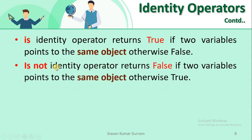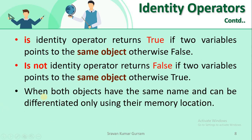Python supports two identity operators: `is` and `is not`. The `is not` operator returns false if two variables point to the same object, otherwise it returns true. An important point is that sometimes two objects may have the same values but internally they may be stored in different memory locations — we can identify that with the help of memory locations only.